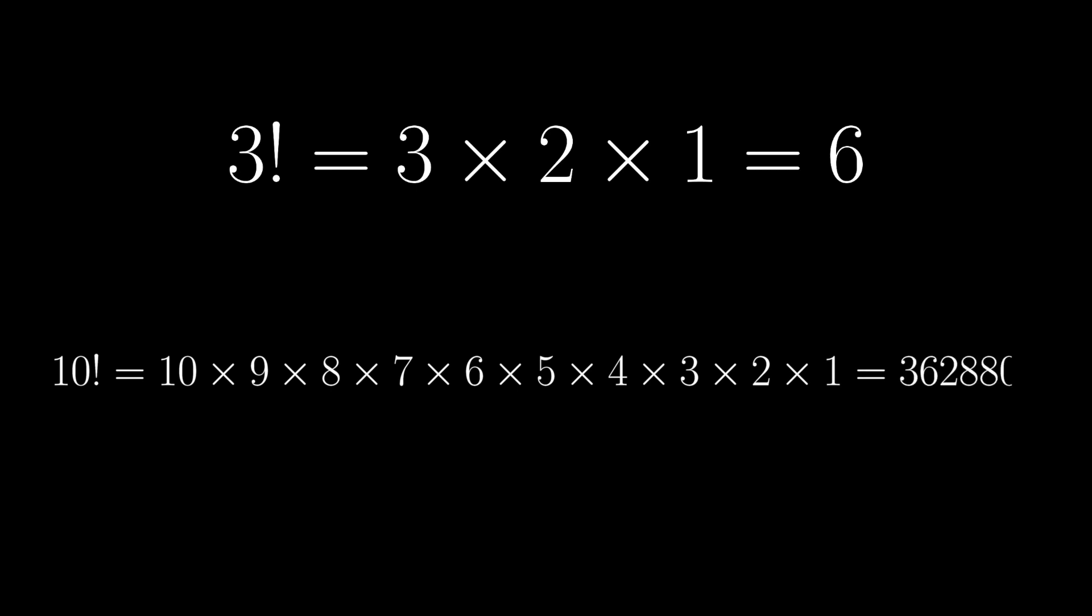Now let's turn our attention to the factorial function. N factorial is the product of all the positive integers between 1 and n. It grows rather quickly. 3 factorial is just 6, but 10 factorial is this number.